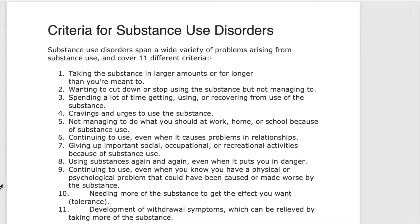The first criteria is taking the substance in larger amounts or for longer than intended — this relates to tolerance. For example, if someone was able to feel intoxicated after one beer but now needs two or three because their tolerance has gotten so high. The second is wanting to cut down or stop using the substance but not managing to, showing a clear dependence on the substance.